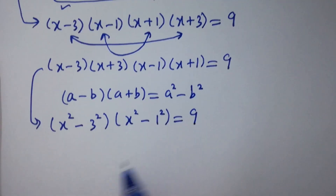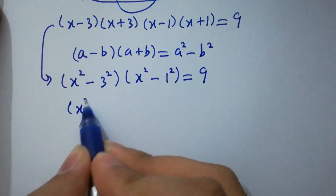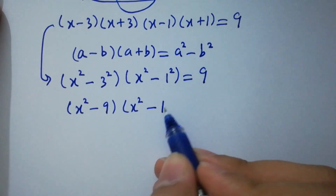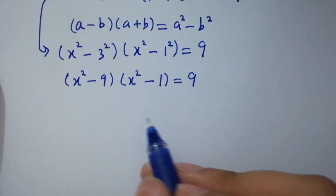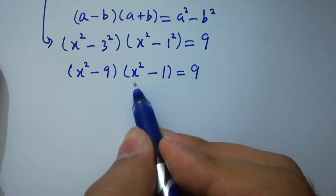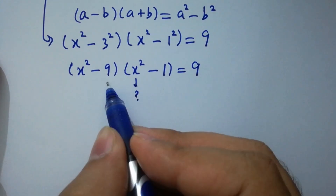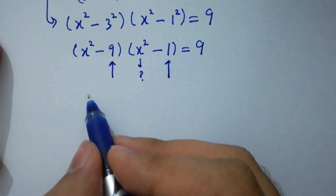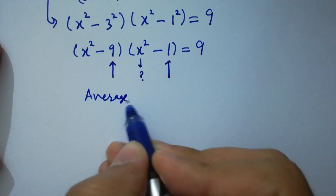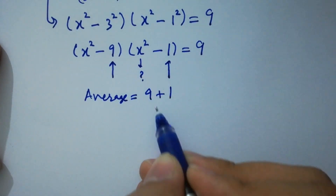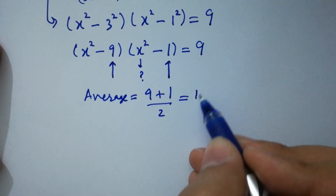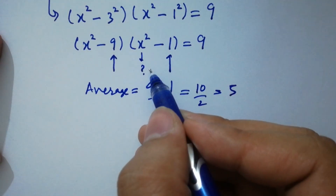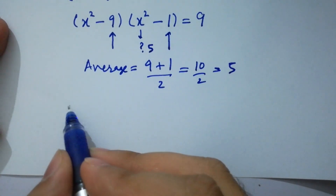Using difference of squares: (x²-9)(x²-1) = 9. To find x², we look at 9 and 1, and find their average: (9+1)/2 = 10/2 = 5. So the value of x² is around 5.